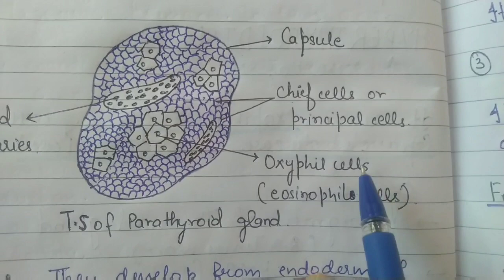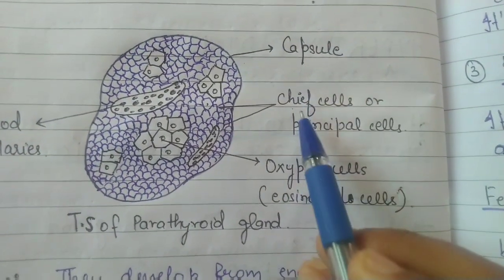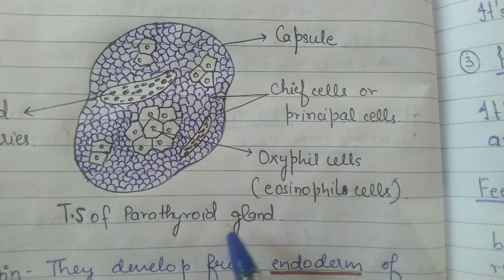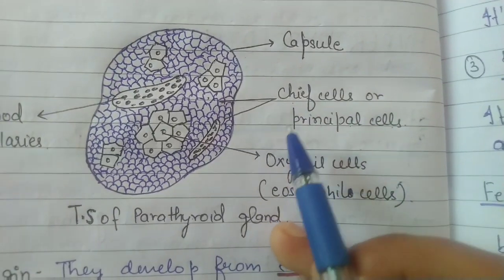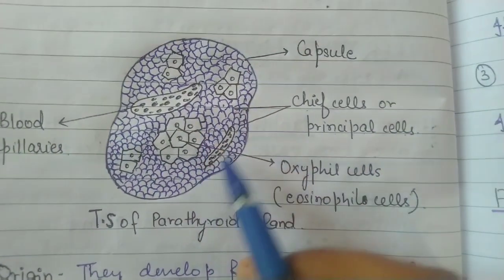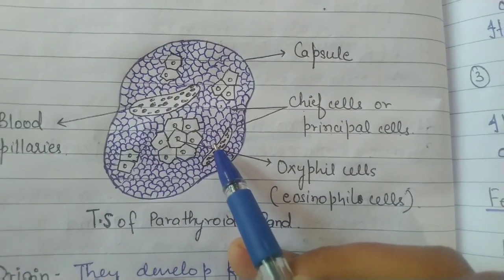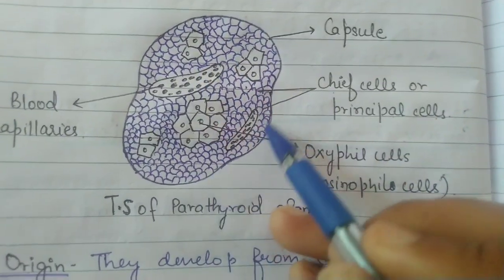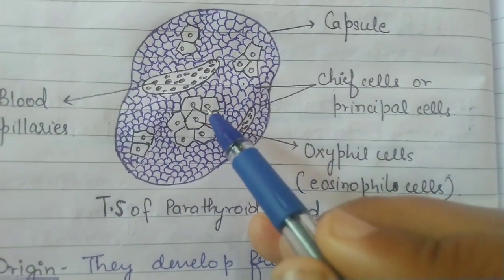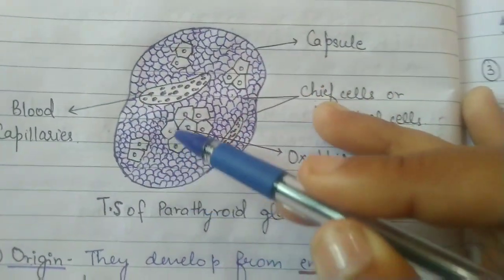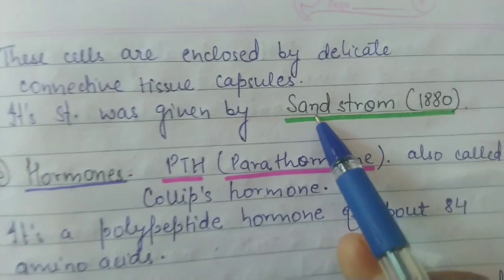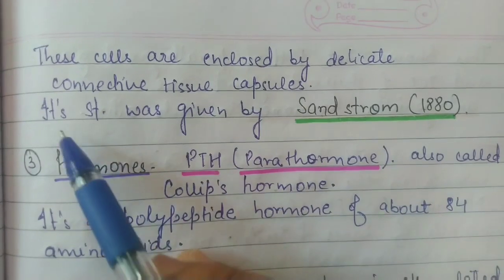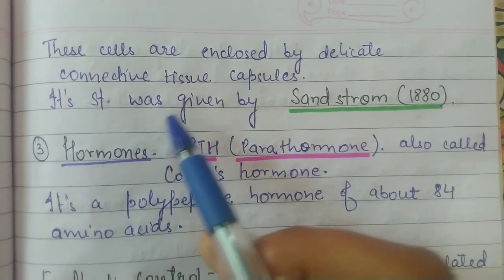The function of oxyphil cells is not yet known. But the chief cells, which are also the principal cells, have the main function of secreting the hormone of the parathyroid gland. All these compact masses of cells are arranged in delicate connective tissue capsules. This transverse section structure of the parathyroid gland was given by Sandstrom in 1880.